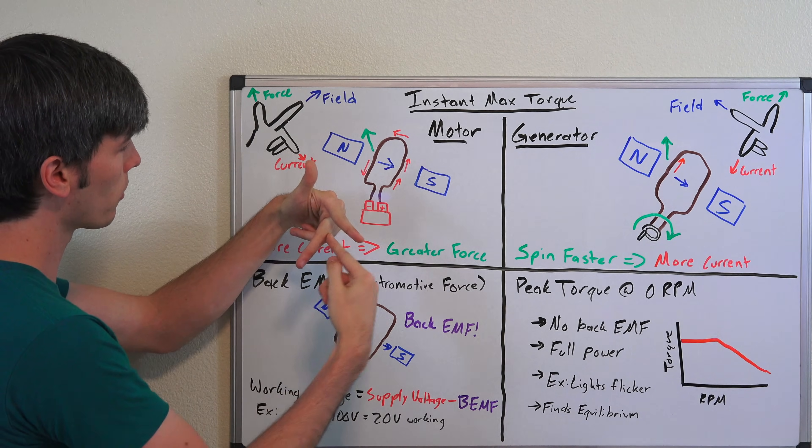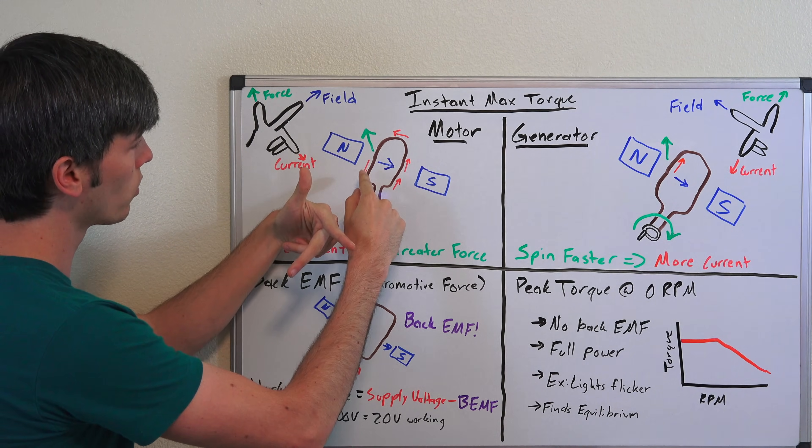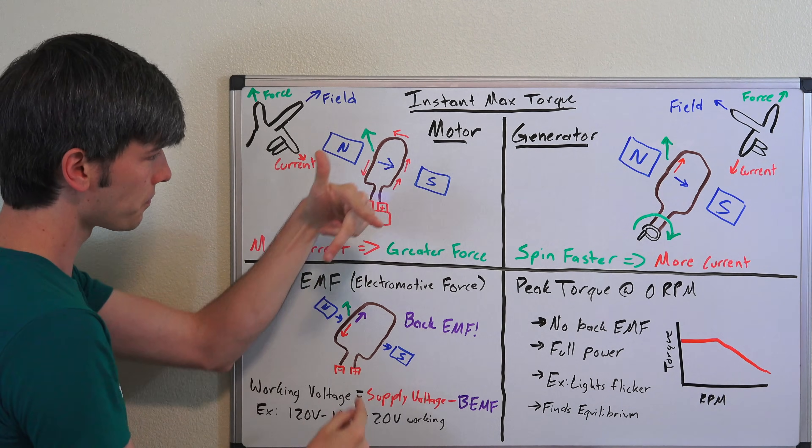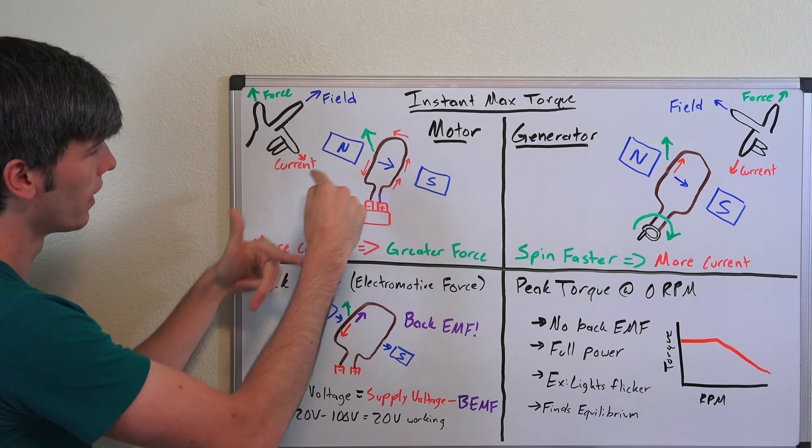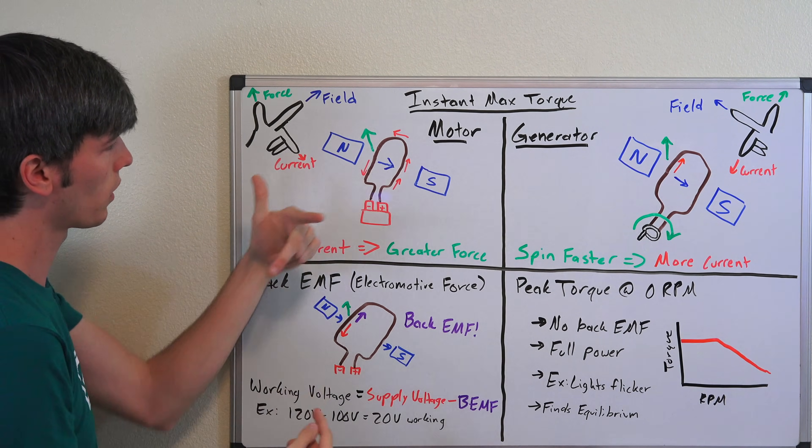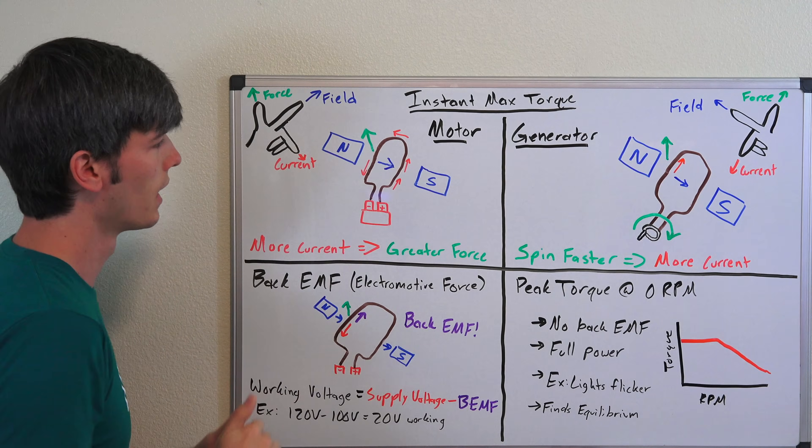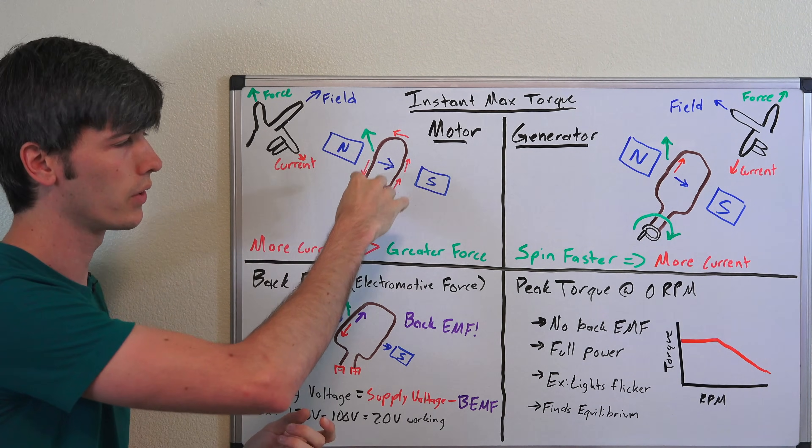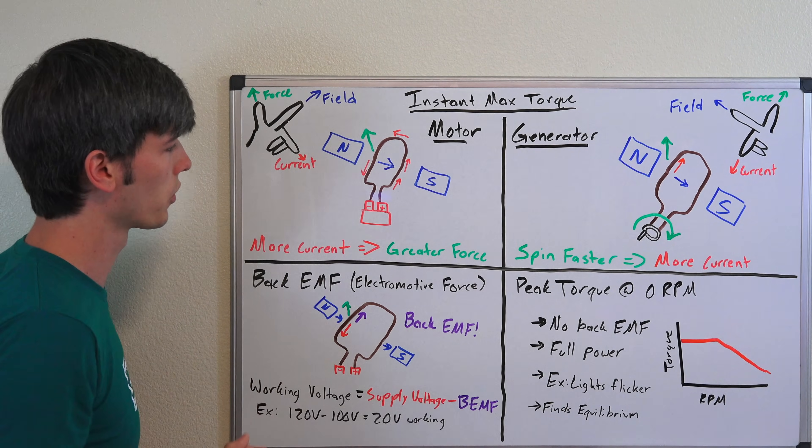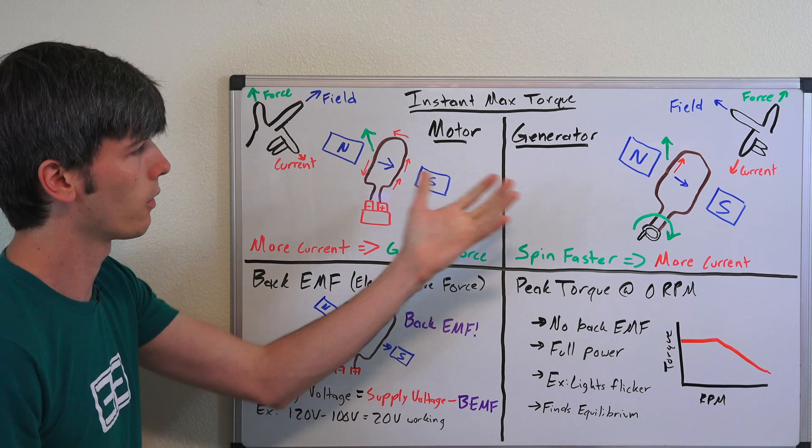As you can see there, field, current, force, so it's going to force that to rotate. The more current you apply to this copper wire, the more it's going to want to spin and will spin faster and faster. Now a generator is basically doing this in reverse.